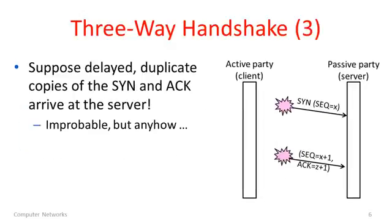Now let's look at some of the robustness of this scheme. Let's say that packets a client sent to set up a connection were somehow duplicated and delayed in the network for maybe 30 seconds or so, and then later — when any previous connection has died and gone away — they arrive at a server. This is very improbable, but like all network protocols we'd like them to work correctly in all cases, including not establishing a connection when the segments are just these delayed duplicates.